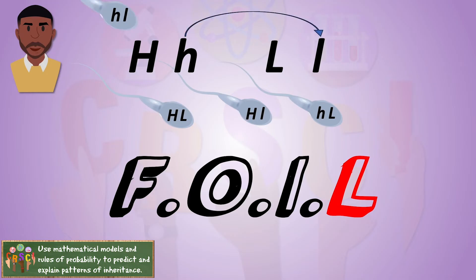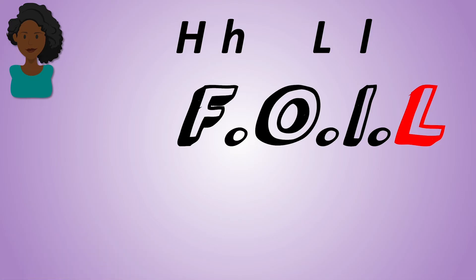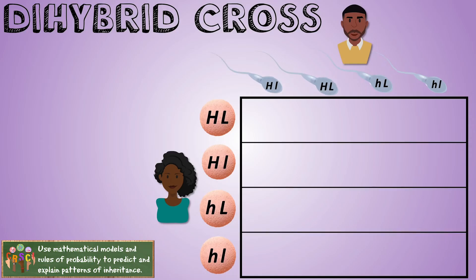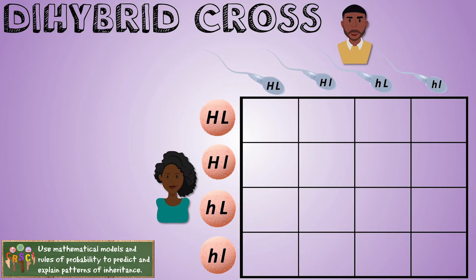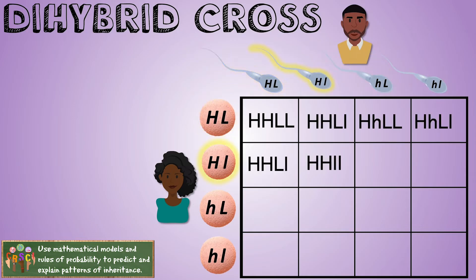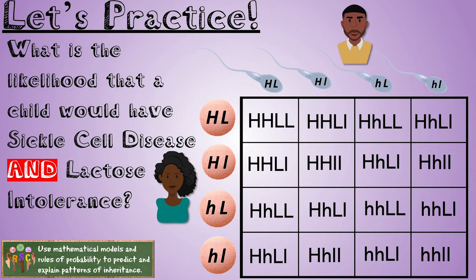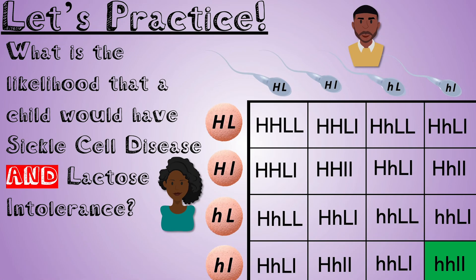We do the same with the second parent — and luckily the outcome is the same. Make a bigger square divided into four long rectangles, cut across four times, and we're ready for our dihybrid cross. If these two parents were to have a child, what is the percent chance the child will have sickle cell disease and be lactose intolerant? That would be homozygous recessive for both traits — just that one box — so 1 out of 16, a 6.25% chance.